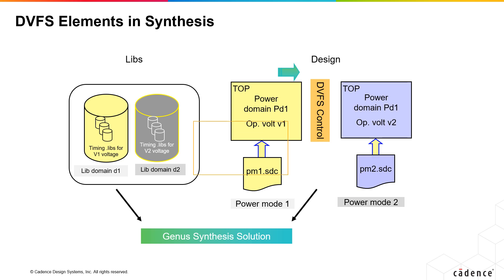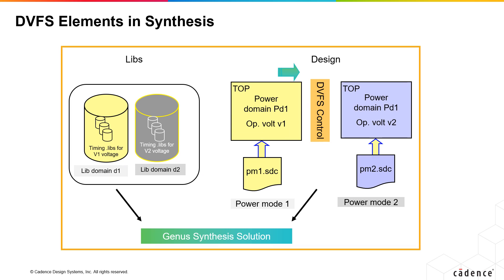If we take this example, you have library domain D1 associated with voltage V1 and library domain D2 associated with voltage V2. There are two power modes and corresponding two SDCs for the power modes, PM1 and PM2.